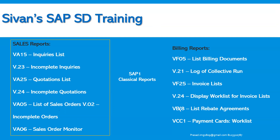The billing reports also — if you go to VF05 transaction, we can see the list of billing documents. V.21 displays the billing log, collective run, VF25 invoice list, V.24 display work list for invoice list, VB(A) list rebate agreements, and VCC1 payment parts work list.